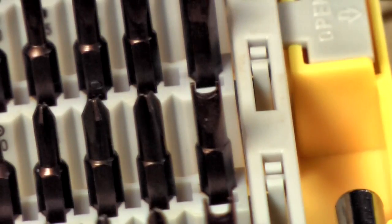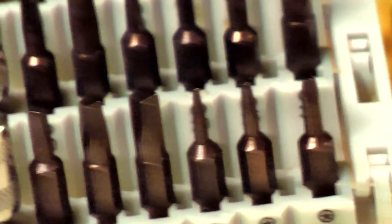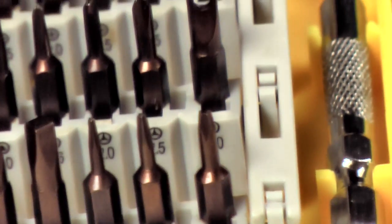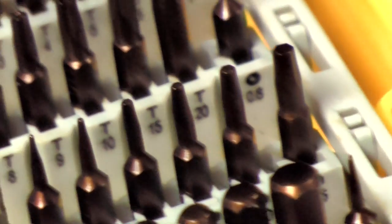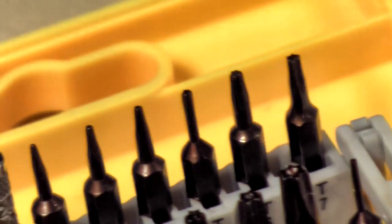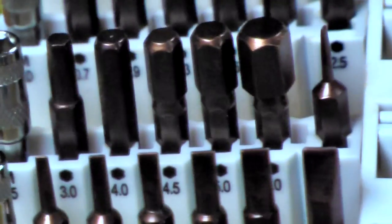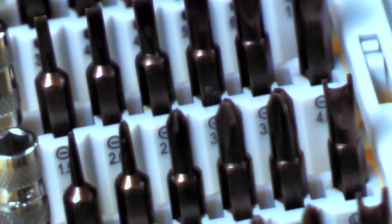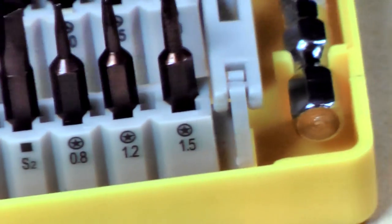It does have the security bits in there. If you're taking apart a phone, usually it has at least one or two security screws to keep you from buggering it up. Well done kit, every shop needs one, and for fifteen bucks you can't go wrong.